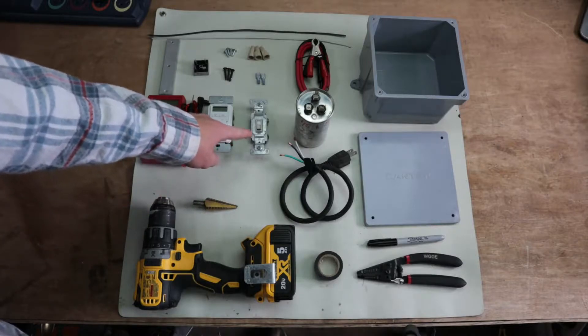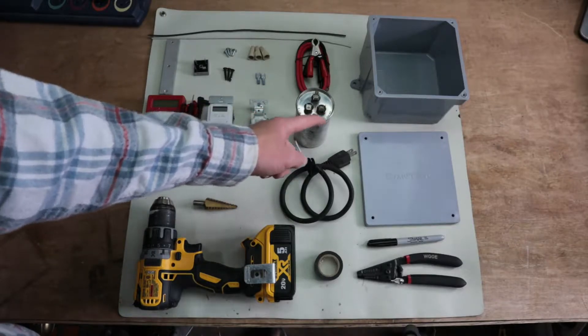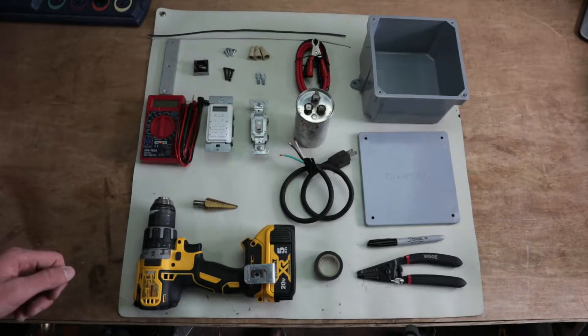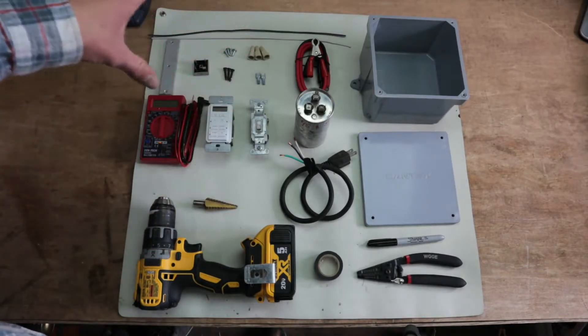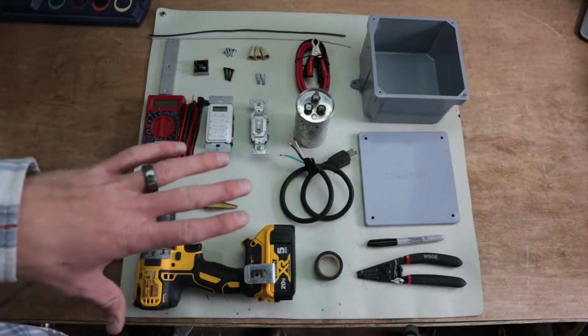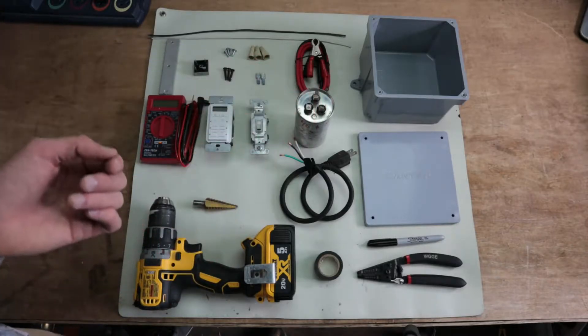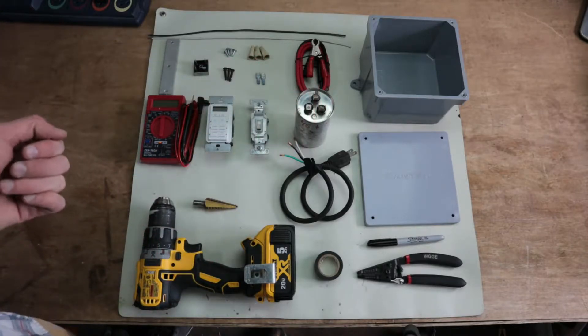You've got a simple switch that's going to allow us to switch between the 45 and the 5 microfarad. And then we've just got the different wiring components and the casing. We're using a pretty thick, pretty hefty plastic case.